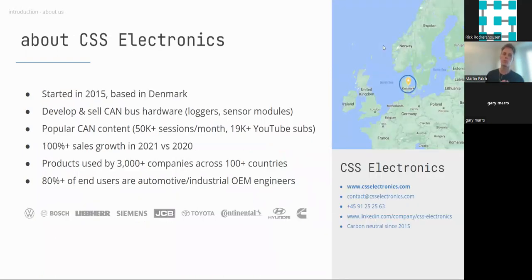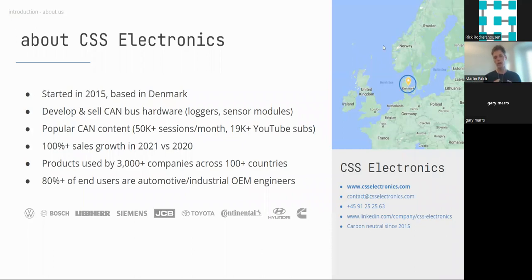Briefly about us: CSS Electronics was founded in 2015 and we're based in Denmark. Our specialty is CAN bus hardware — specifically CAN bus data loggers and sensor-to-CAN modules. We've been growing very fast since we started, doubling in 2021. Today we serve more than 3,000 companies across 100+ countries. Our main segments are automotive and industrial OEM engineers.